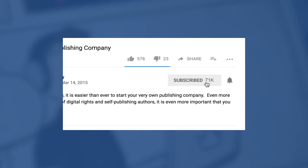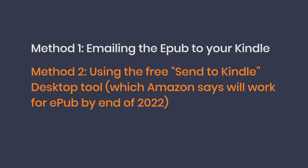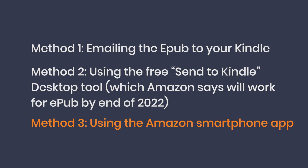But before I get into that, if you haven't clicked the subscribe button, go ahead and hit that, as well as the little bell icon to be notified when my next video on book marketing or anything dealing with the author community comes out. And with that, let's begin. When it comes to sending an EPUB file to a Kindle, there are three ways you can do this: Method one, emailing the EPUB to your Kindle. Method two, using the free Send to Kindle desktop tool, which Amazon says will work for EPUB by end of 2022. And method three, using the Amazon smartphone app.